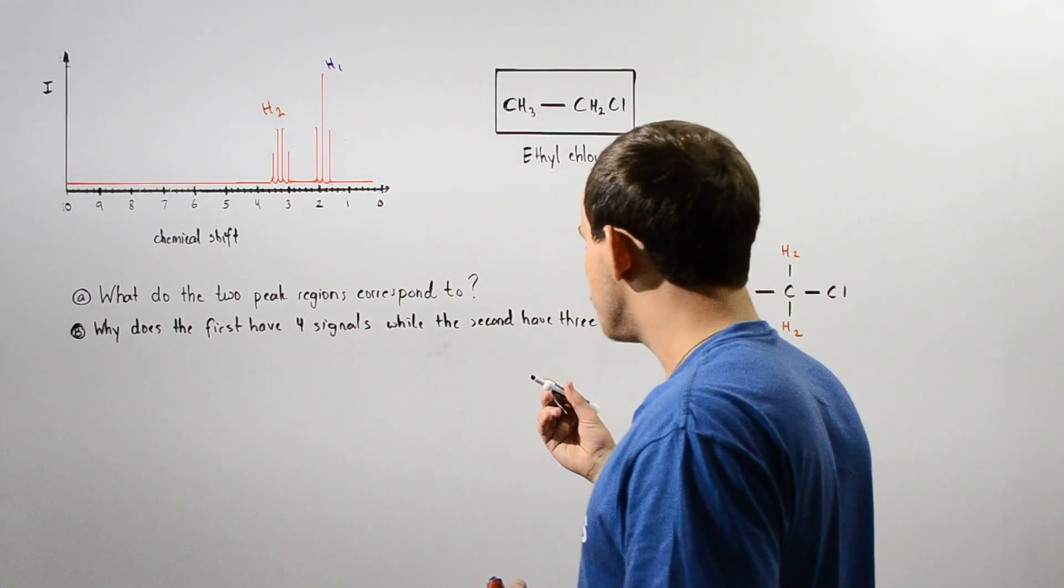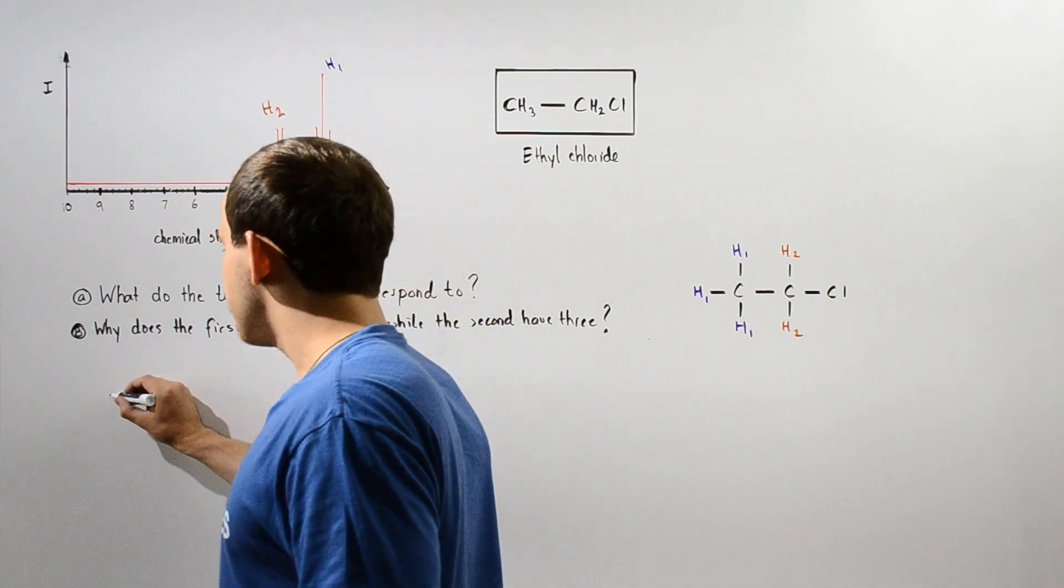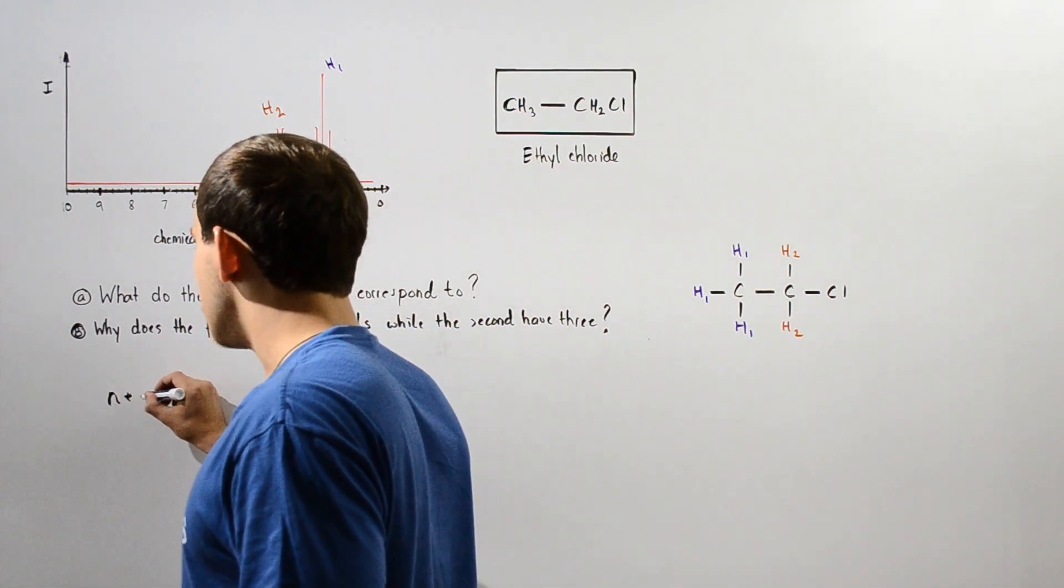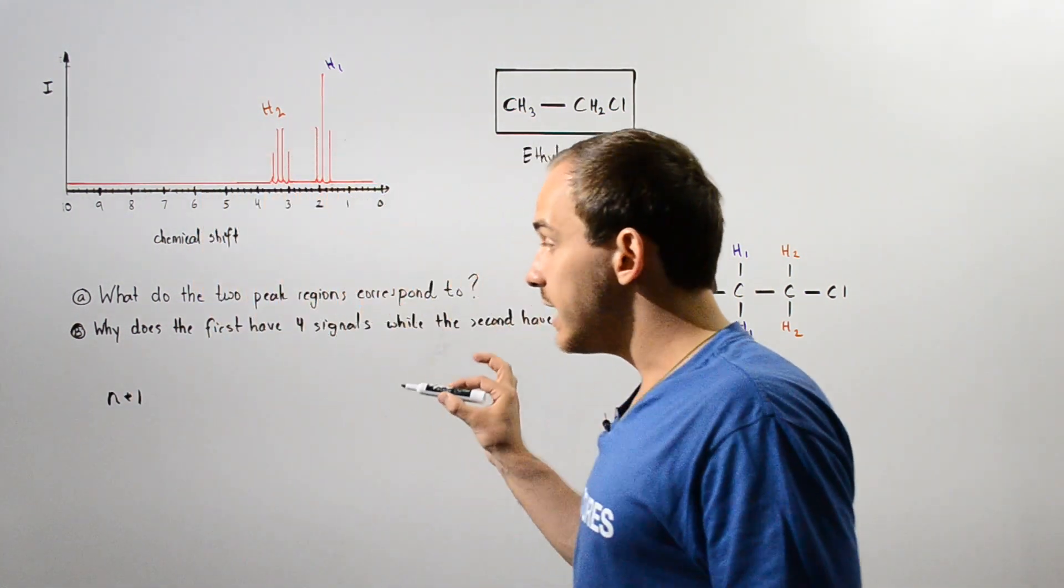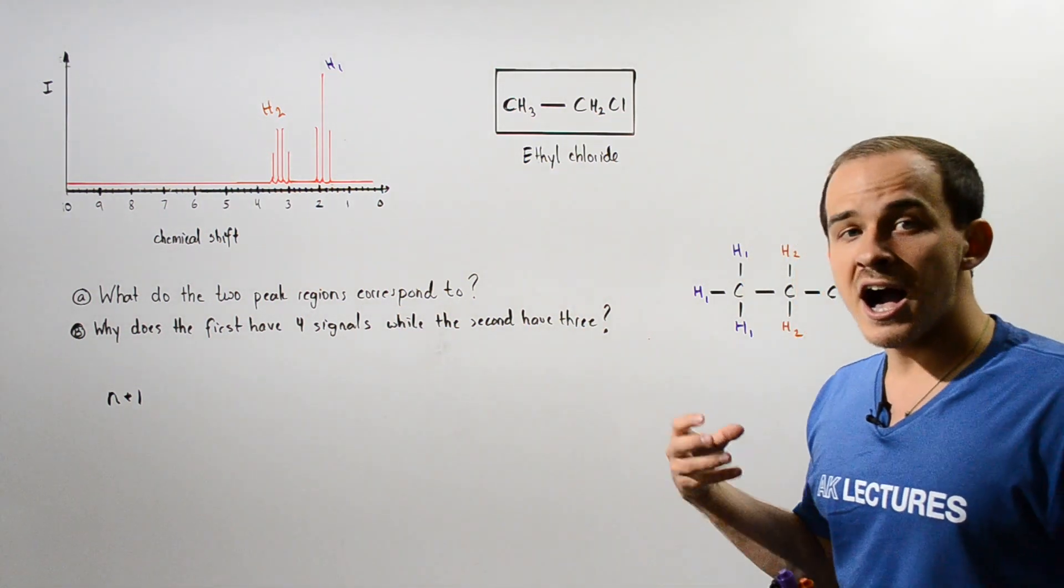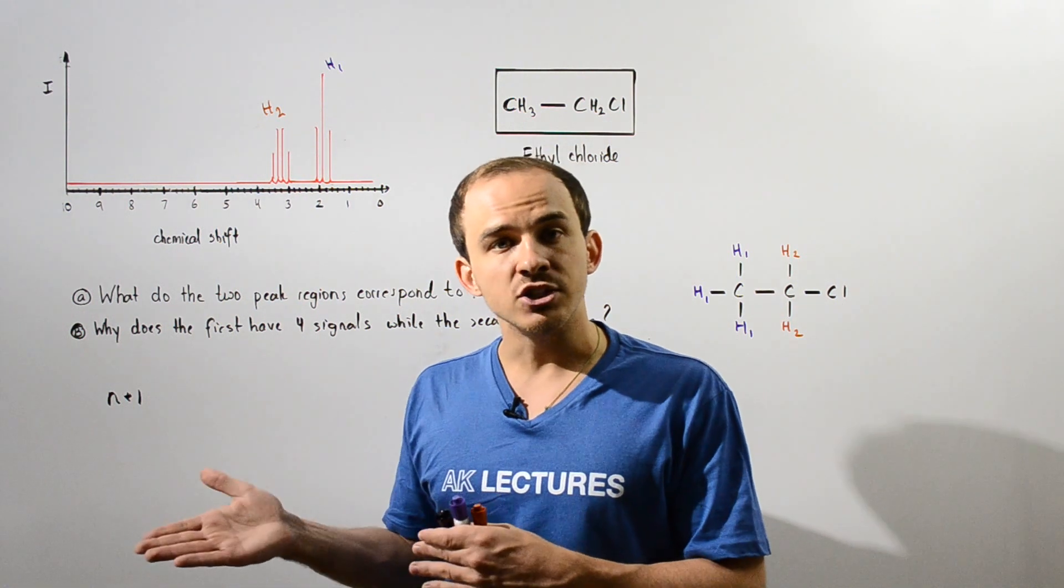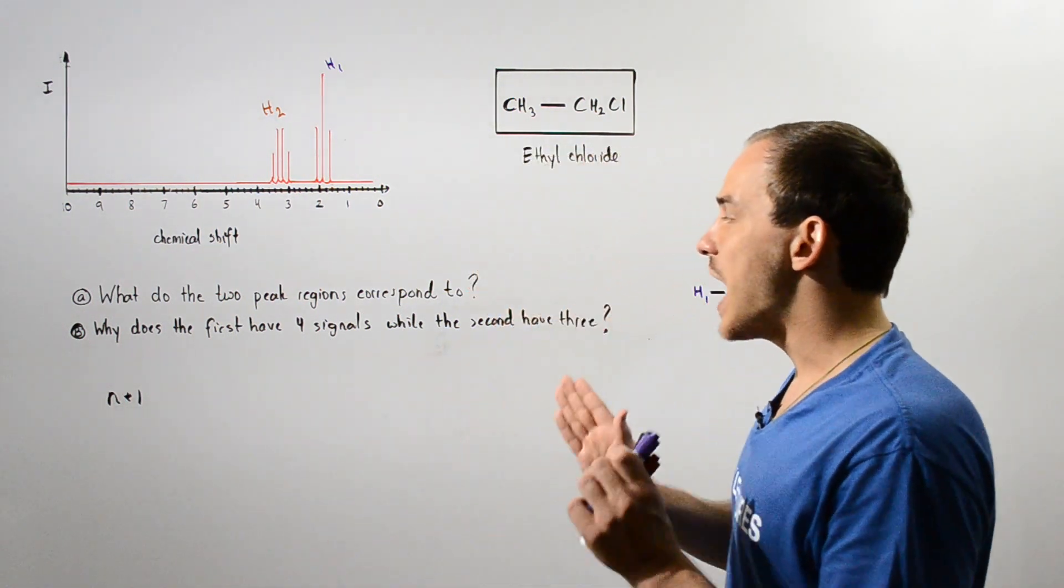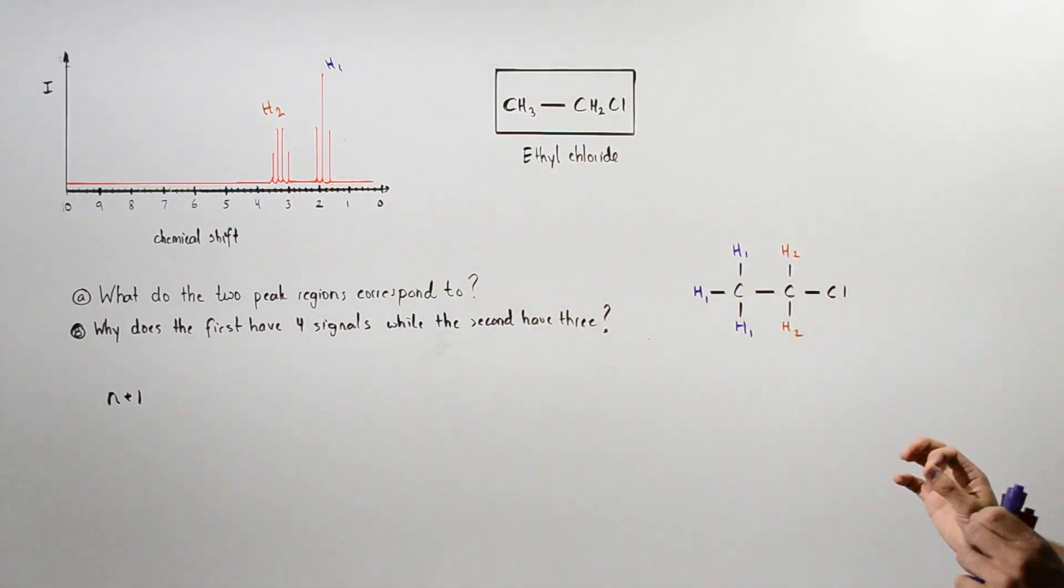So we basically want to use the rule that is given by the equation n plus one. So basically n represents the number of identical hydrogen atoms that are adjacent or next to the H atom that we are interested in.